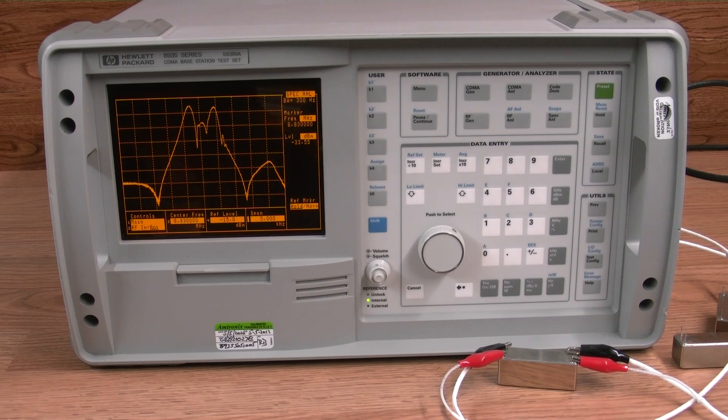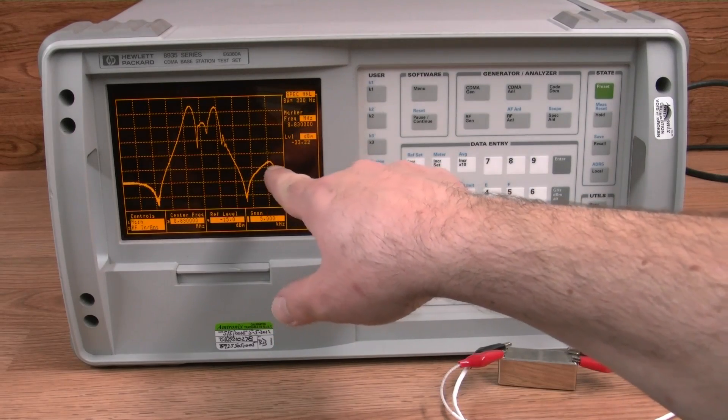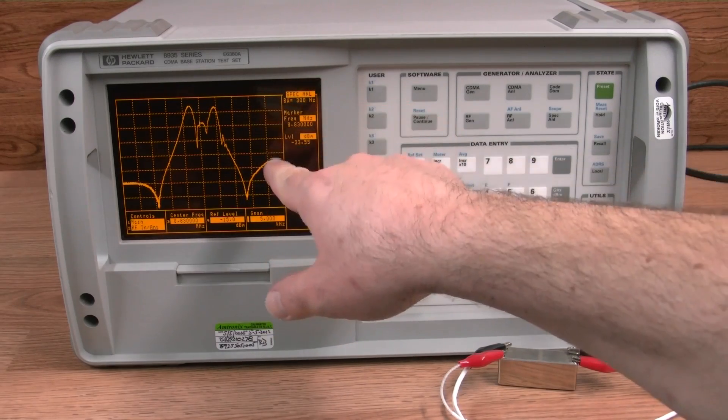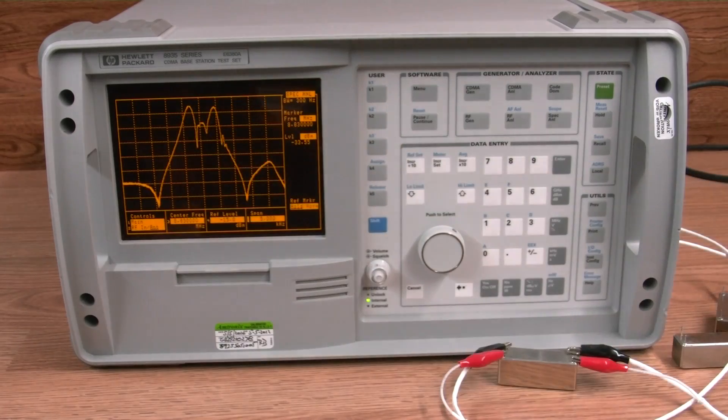So you can see that one's definitely not going to work out so well. We've got a lobe down here - you're not going to hear much out of this because it's quite a few dB down - but you're definitely going to hear two distinct lobes when you roll by a station.